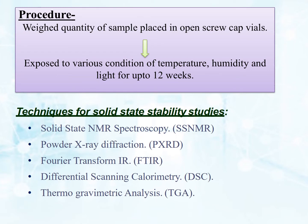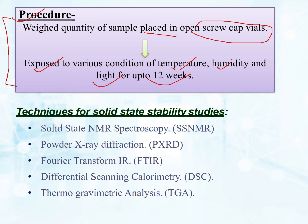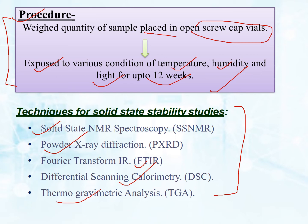The procedure for testing solid state stability: weigh a quantity of sample and place it in screw cap vials. Next, expose it to various conditions of temperature, humidity, and light for up to 12 weeks. Techniques used for solid state stability study include solid state NMR spectroscopy, powder X-ray diffraction, FTIR, differential scanning calorimetry, and thermogravimetric analysis.